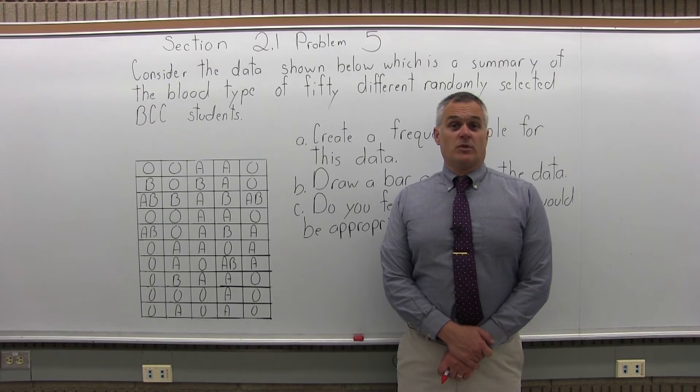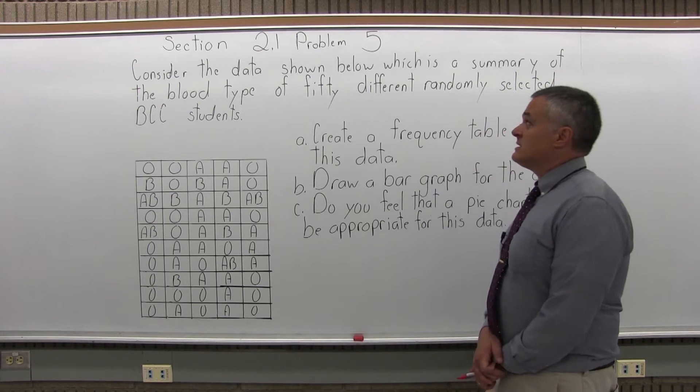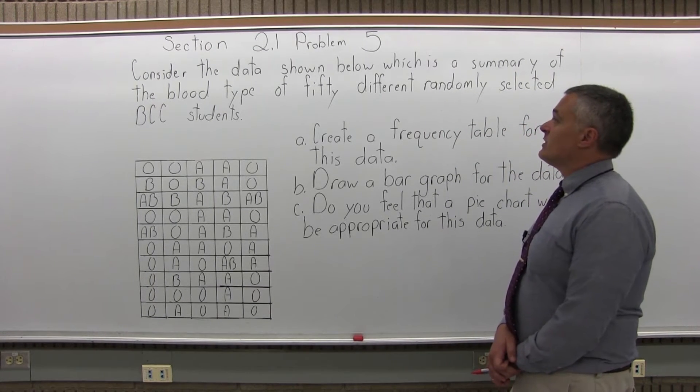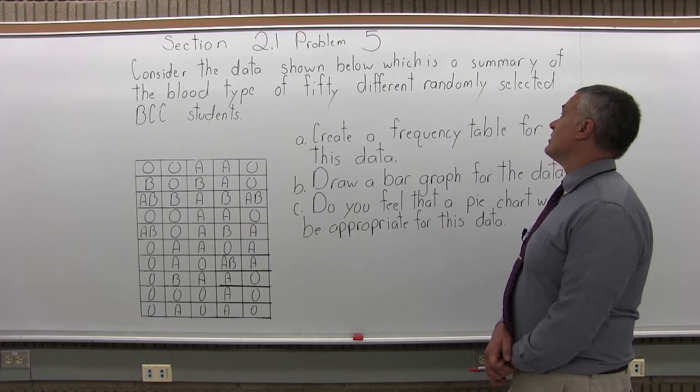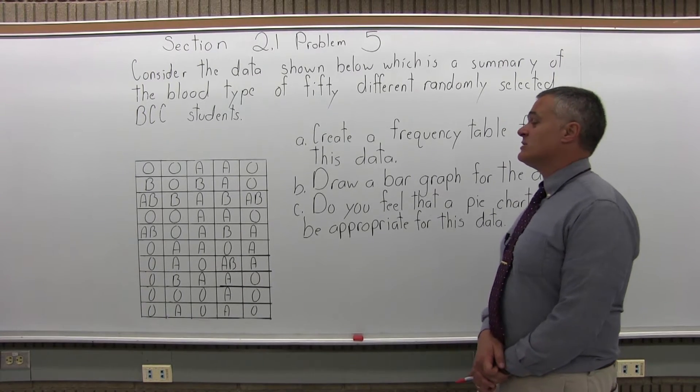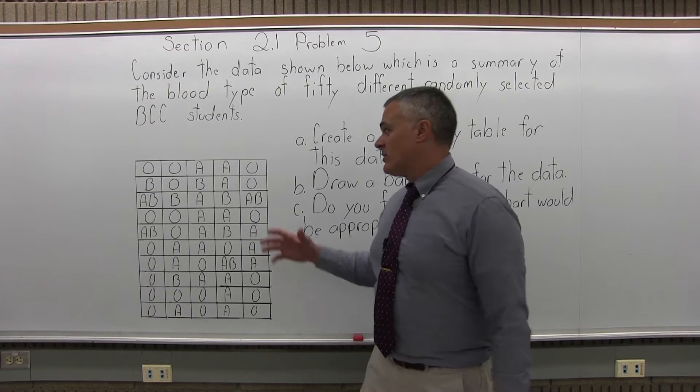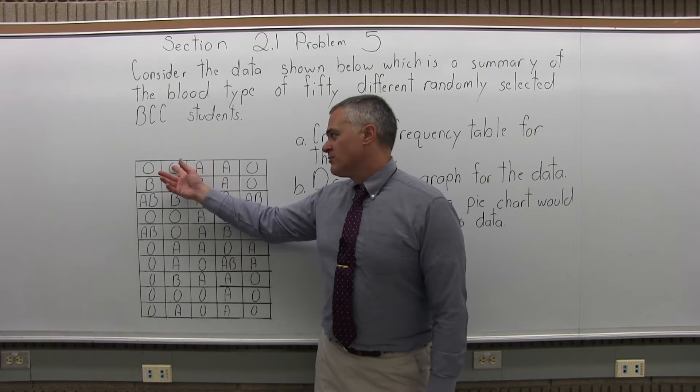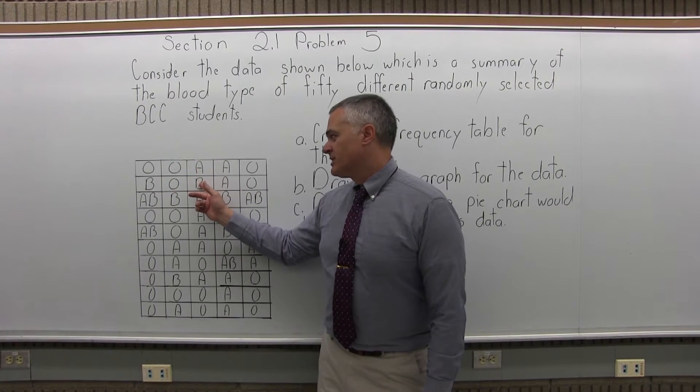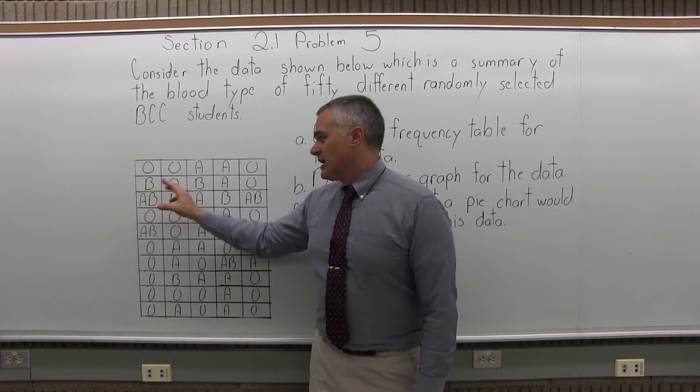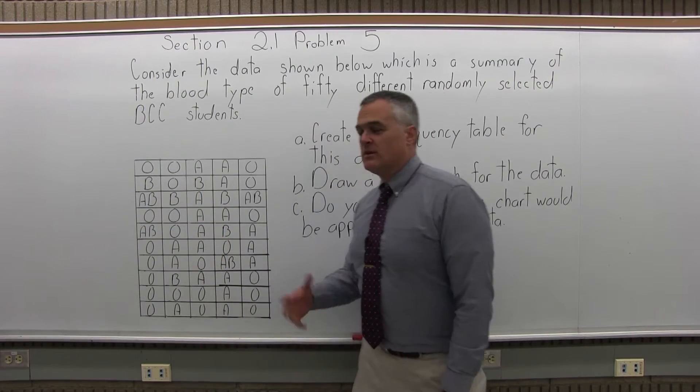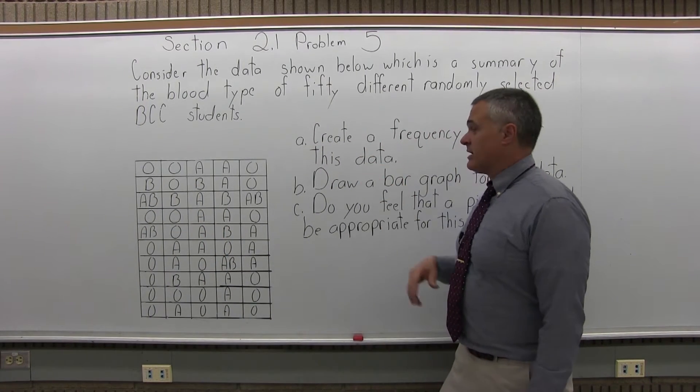This is Section 2.1, Problem number 5. It says, consider the data shown below, which is a summary of the blood type of 50 different randomly selected BCC students. You have a chart here with different blood types: blood type O, blood type A, blood type B, and blood type AB. So it's just 50 students, what blood type do they have?